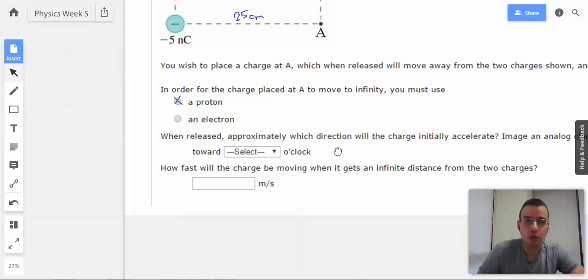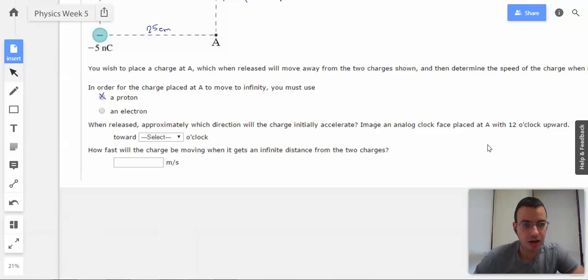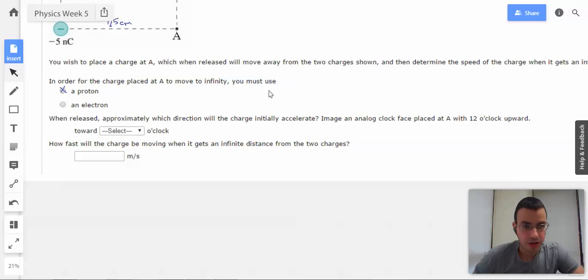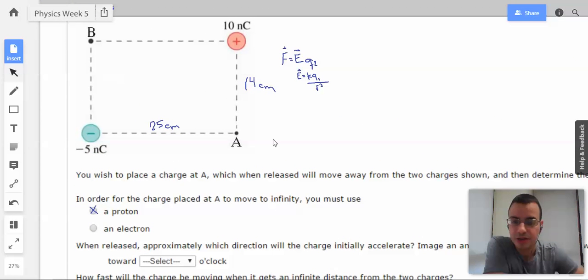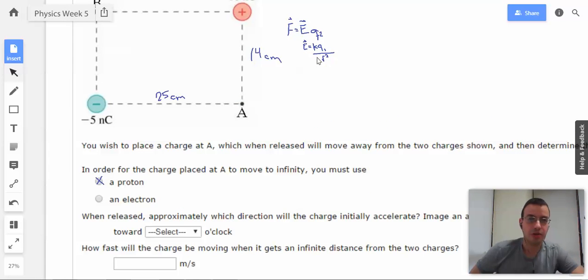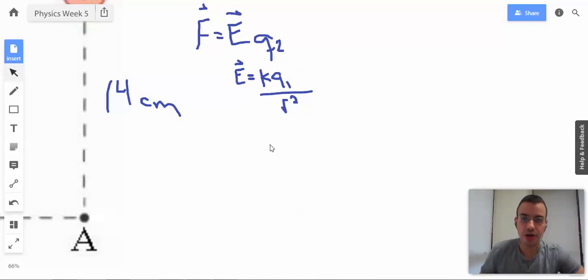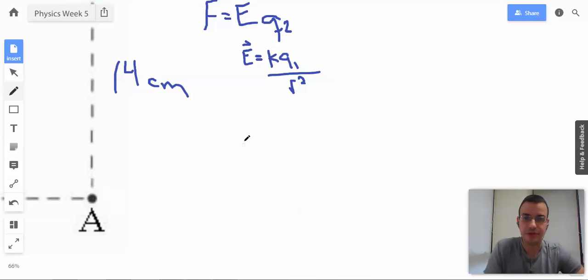When released, approximately which direction will the charge initially accelerate? Imagine an analog clock with clock face placed at A, with 12 o'clock being upward. So the direction it's going to accelerate initially will be determined by force, which will be in the same direction as the electric field.